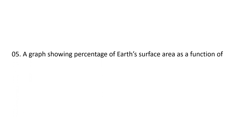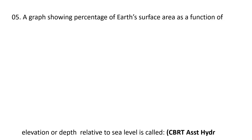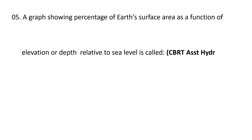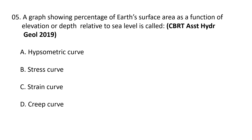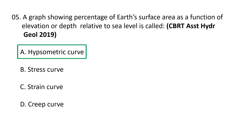Next question: a graph showing the percentage of the Earth's surface area as a function of elevation or depth relative to sea level is called: a) hypsometric curve, b) stress curve, c) strain curve, d) creep curve. The correct option is a) hypsometric curve. A hypsometric curve is essentially a graph that shows the proportion of land area existing at various elevations by plotting relative area against relative height.